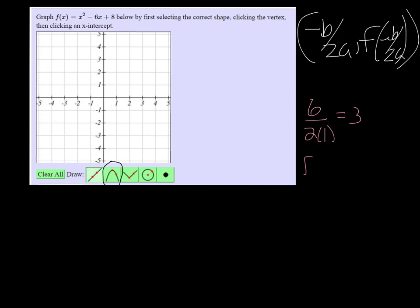So I've got to plug 3 into the function to find what f of negative b over 2a is. I'm just plugging that into the function.